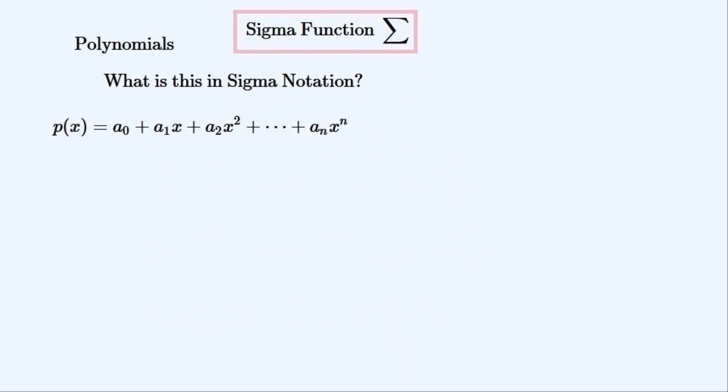Now to look at how polynomials are represented in sigma notation. Here is a polynomial in dot notation. And we have to convert it into sigma notation. It is helpful to get the ith term in this series of terms. We'll use this ith term to get it into sigma notation. I will vary from 0 to n in this case.